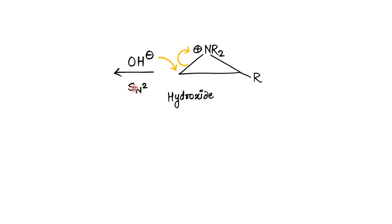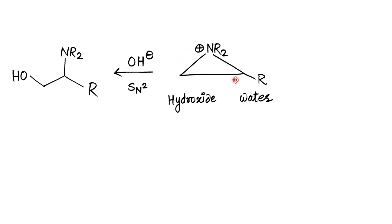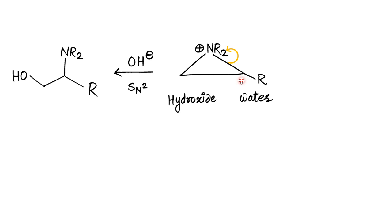If water is acting as the nucleophile, the condition is different. Water (HOH) is not a strong enough nucleophile to give a direct SN2 attack, so the reaction proceeds by SN1 — a two-step process. In the first step, breaking of the C–N bond occurs: the electron pair shifts onto nitrogen, restoring its lone pair, and a carbocation forms at this carbon.